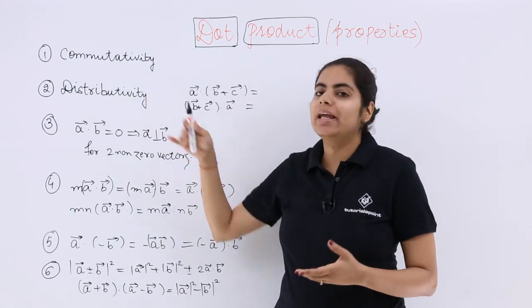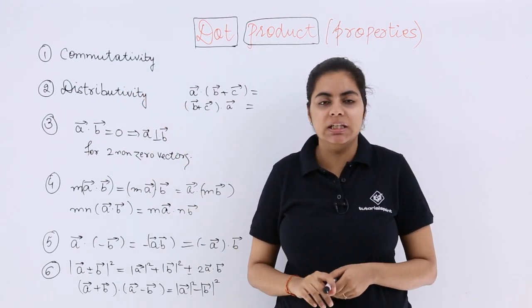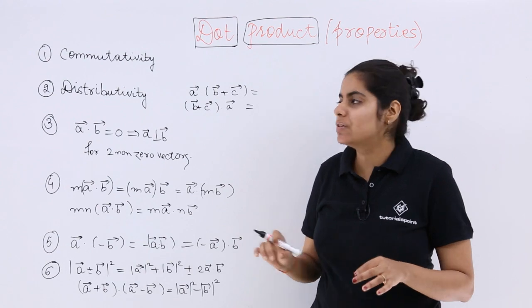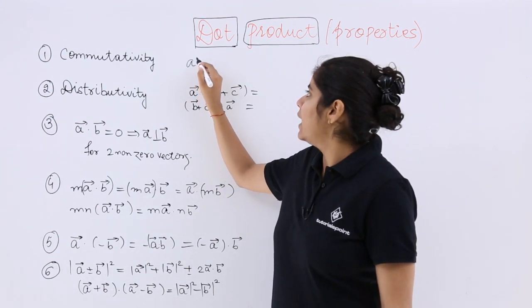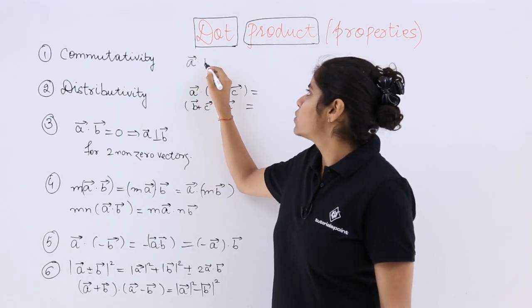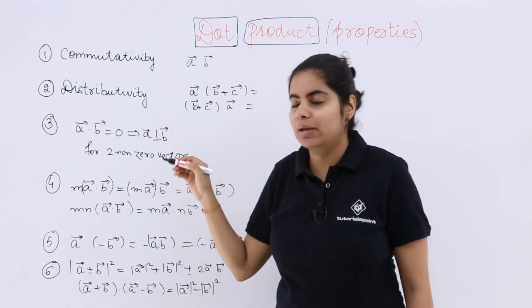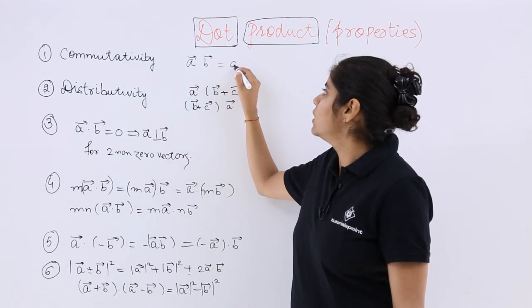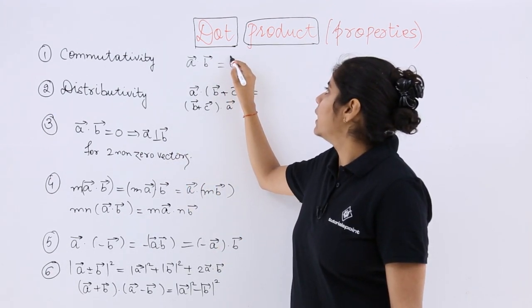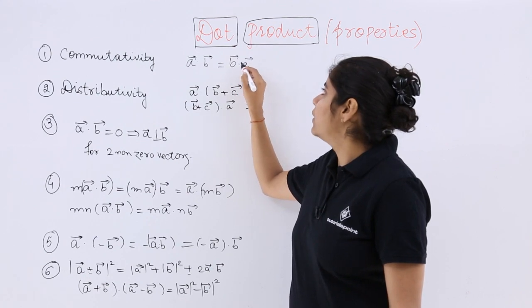The first one is very important and very popular: commutativity. You already know what commutativity is. If you have A and B as two vectors, the vector scalar product is commutative. That means A.B equals B.A. That's what is meant by the commutativity property.